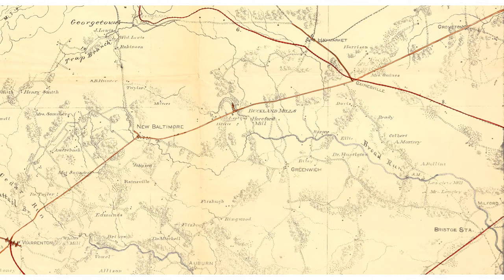On October 18, Union cavalry commander Judson Kilpatrick received orders to move out on the Warrenton Pike and ascertain movements and position of the enemy. He soon engaged with Stuart's forces at Groveton, at the top right-hand corner of this map, and pursued down the pike to Gainesville, where both units camped for the night.